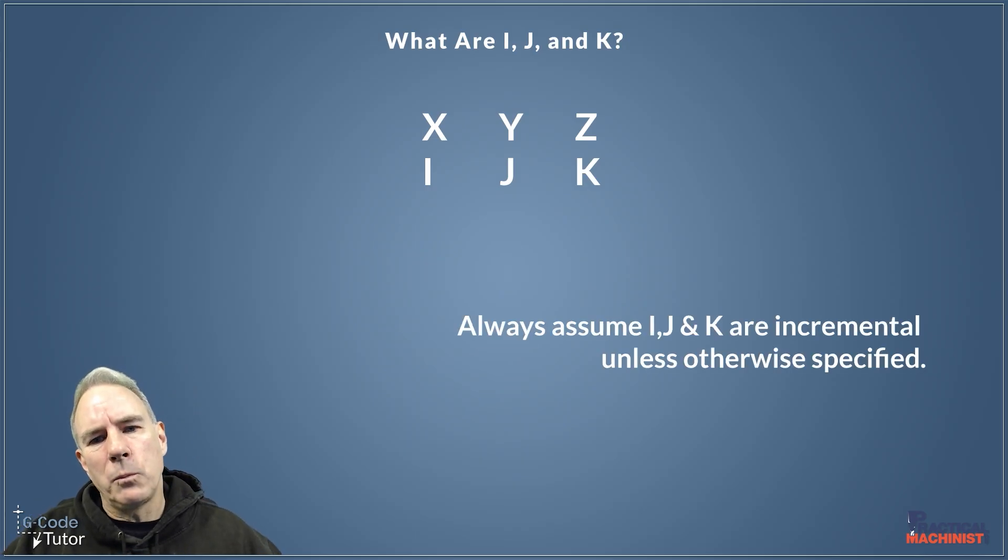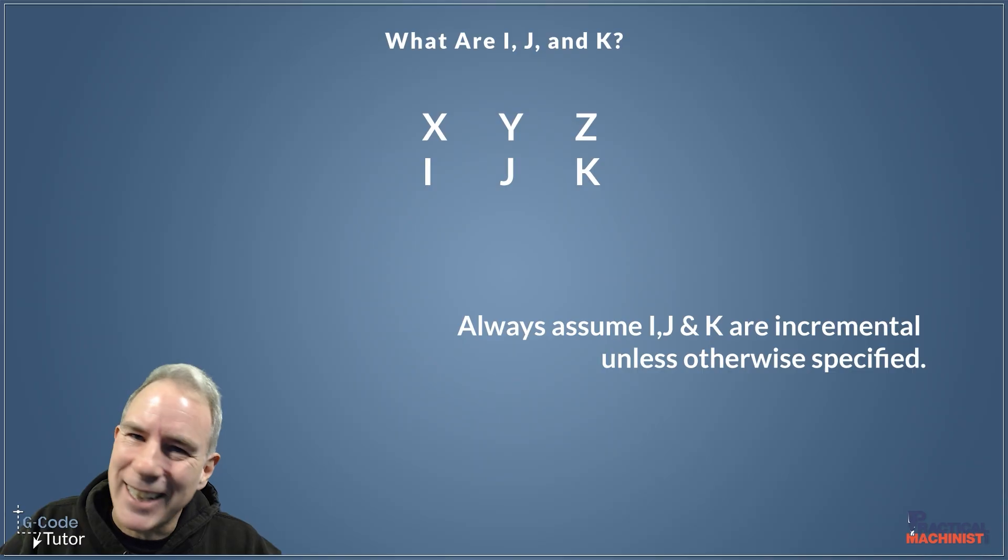So we would always assume I, J and K are incremental unless otherwise specified. It's very easy to change this in the program. So even if your machine generally does this, a previous operator may have changed it in the program. We can also change this in parameters, but generally assume that these are incremental unless otherwise stated, but be careful with that just in case they're not.